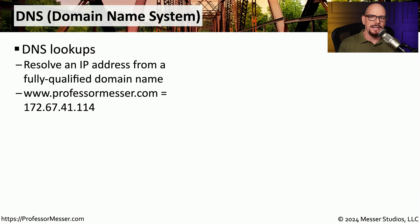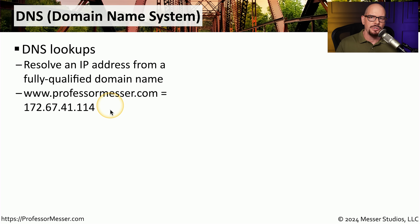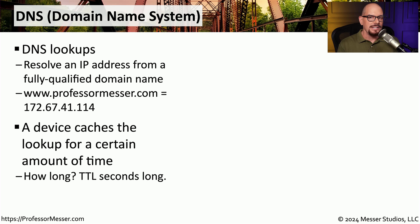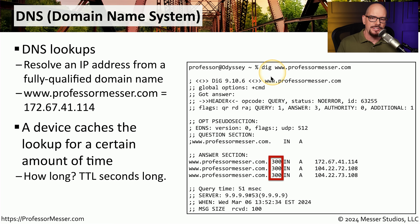Depending on the protocol you're using, time to live may have a different definition. With routers, TTL is associated with the number of hops. But in DNS — the domain name system — the time to live is associated with the total number of seconds. For example, when performing a DNS lookup using nslookup or dig to resolve www.professormesser.com, the DNS server returns an IP address along with a TTL value. Inside that DNS resolution is information about time to live, telling us how long we should cache this local entry on our system — for a certain number of seconds defined by the TTL configured on the DNS server. This is the output from the command dig www.professormesser.com.